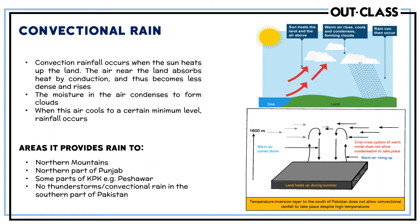The area that receives convectional rainfall includes most of Pakistan, leaving out the Balochistan region. This includes the northern mountains, north-western mountains, some parts of the Peshawar valley, and some parts of southern Pakistan. These can happen any time of the year — there is no specific season for them.